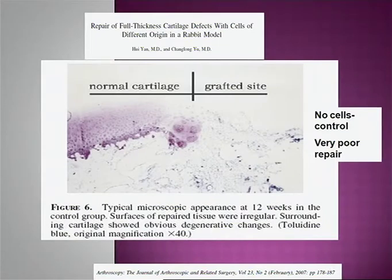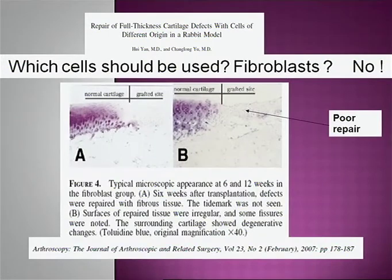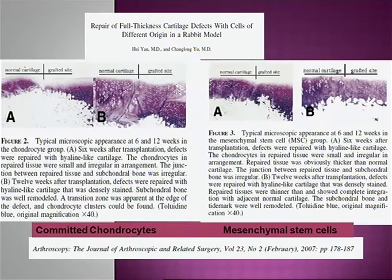We can see that if we have no cells, we have poor repair. If we use fibroblasts, also poor repair. But if we use committed, fully differentiated chondrocytes or mesenchymal stem cells, we can have nice repairs.